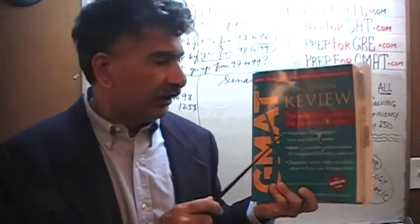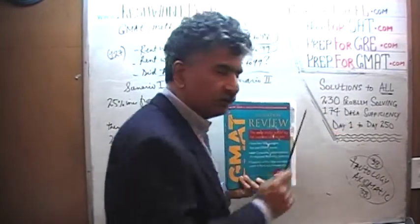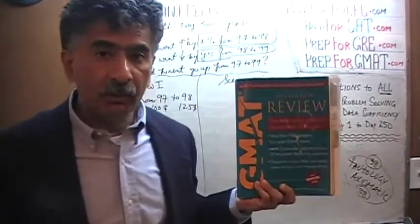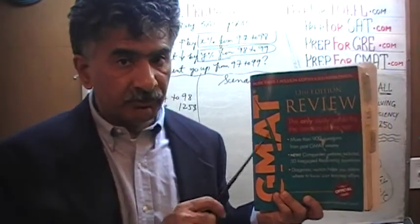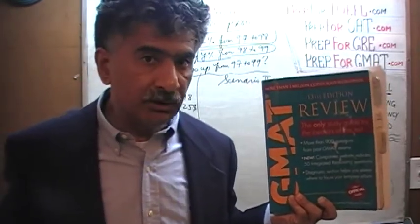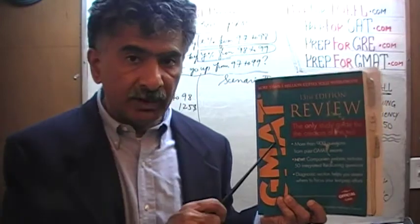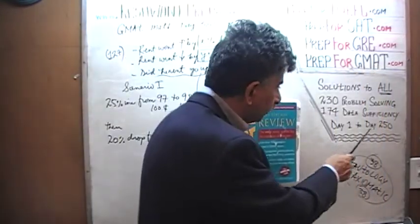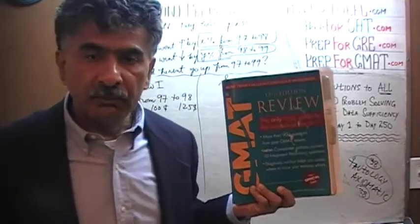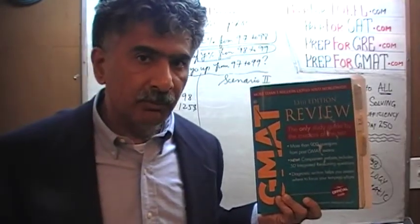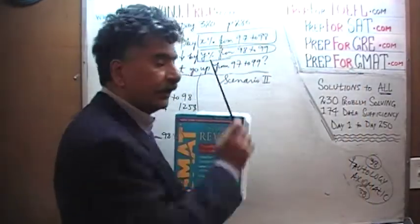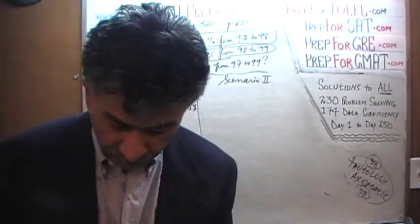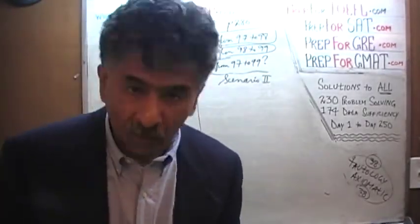The book contains 230 problem solving questions and 174 data sufficiency questions. We have already solved every single math problem from this book. If you are interested in watching the original solutions to any one of these problems, you will find them on day number 1 to 250. Right now we are redoing the problems and we are on page number 286. Please turn to it — page 286, problem number 127.